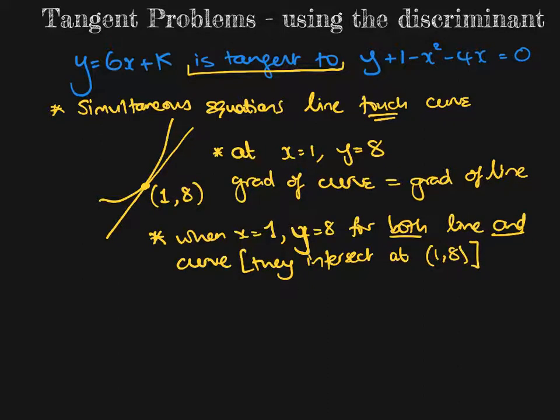The fact that the simultaneous equations, if you do simultaneous equations, then you can use the fact that the line just touches the curve, so there's only one solution. And one solution means the discriminant is zero.